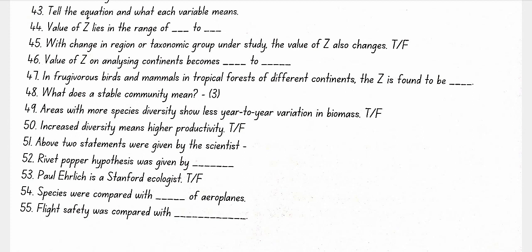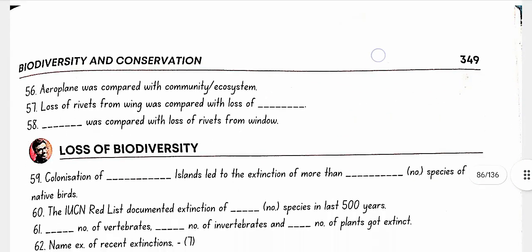A stable community should not show too much variation in productivity from year to year. It must be resistant or resilient to occasional disturbances (natural or manmade) and resistant to invasions by alien species. Areas with more species diversity show less year-to-year variation in biomass, and increased diversity means higher productivity — statements given by scientist David Tilman.